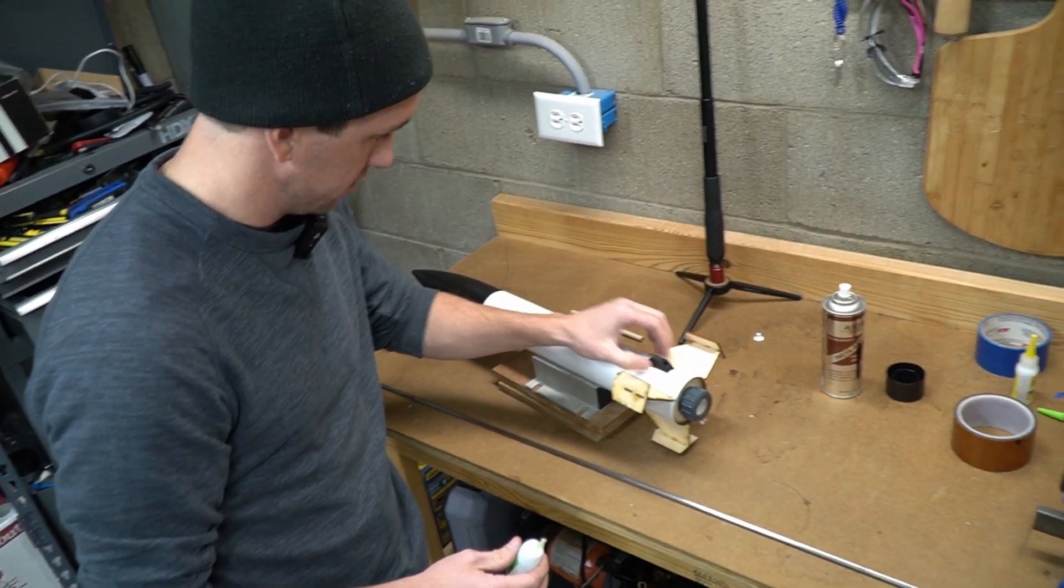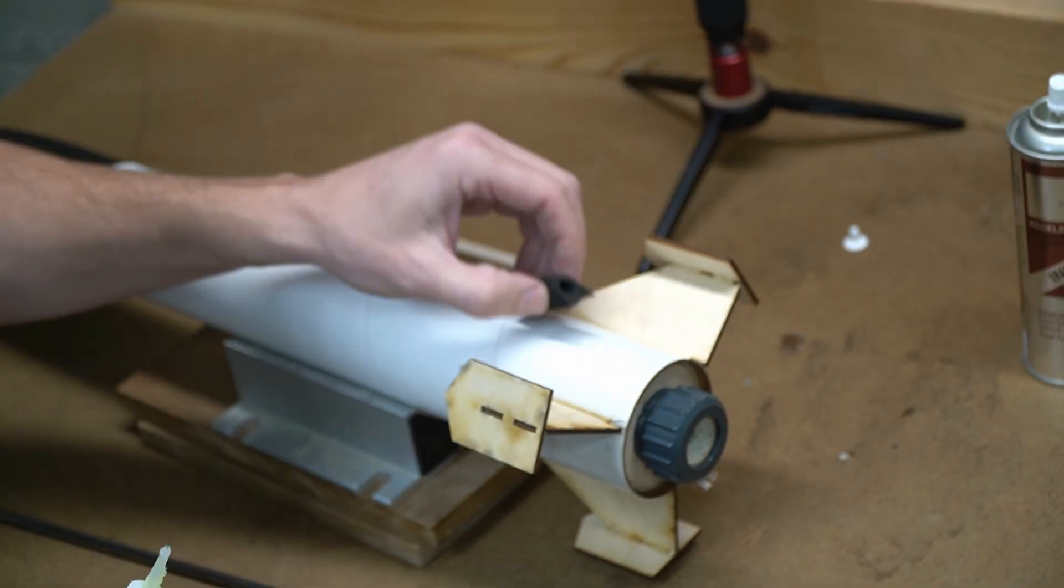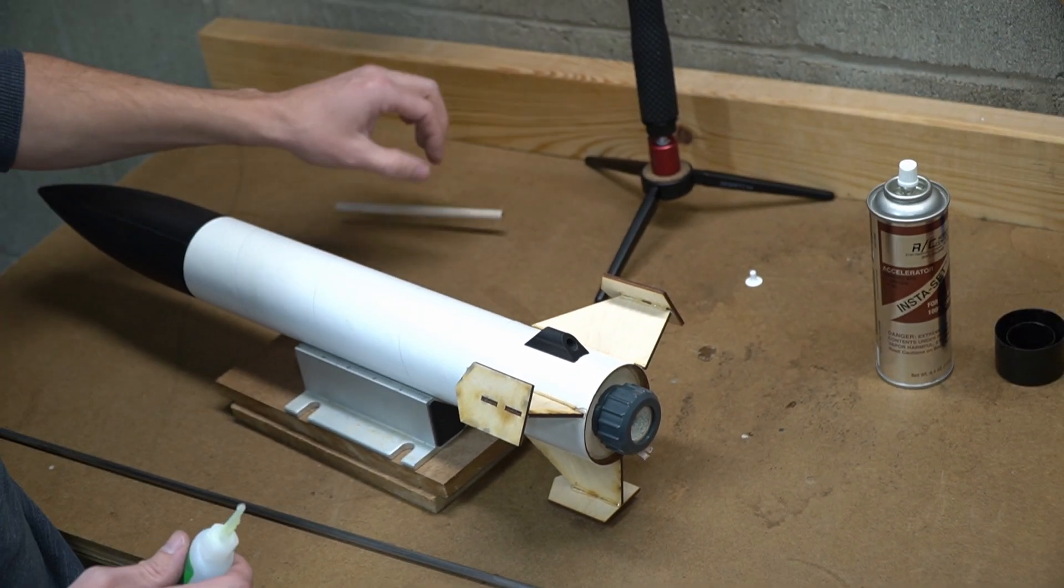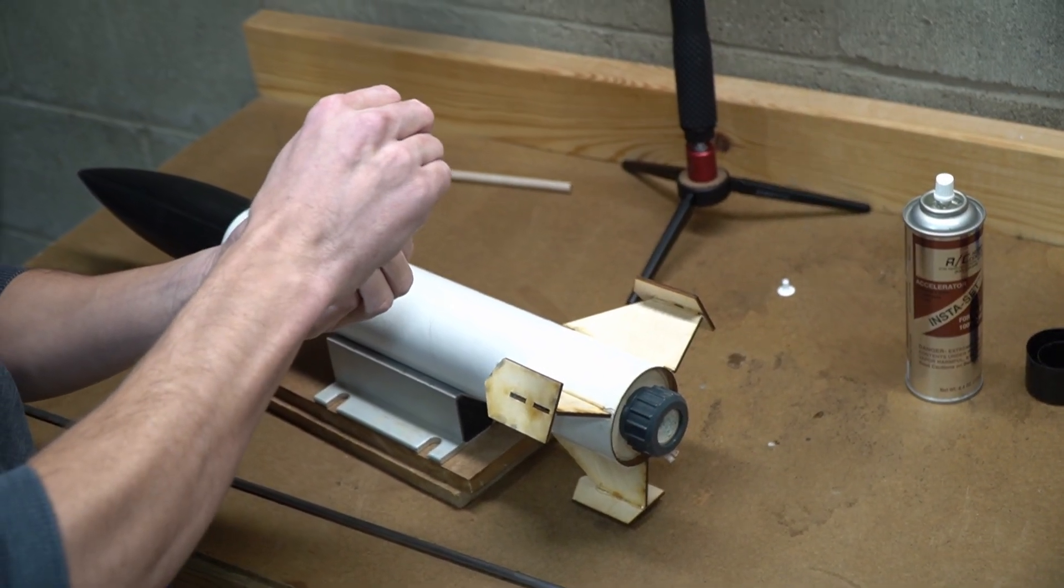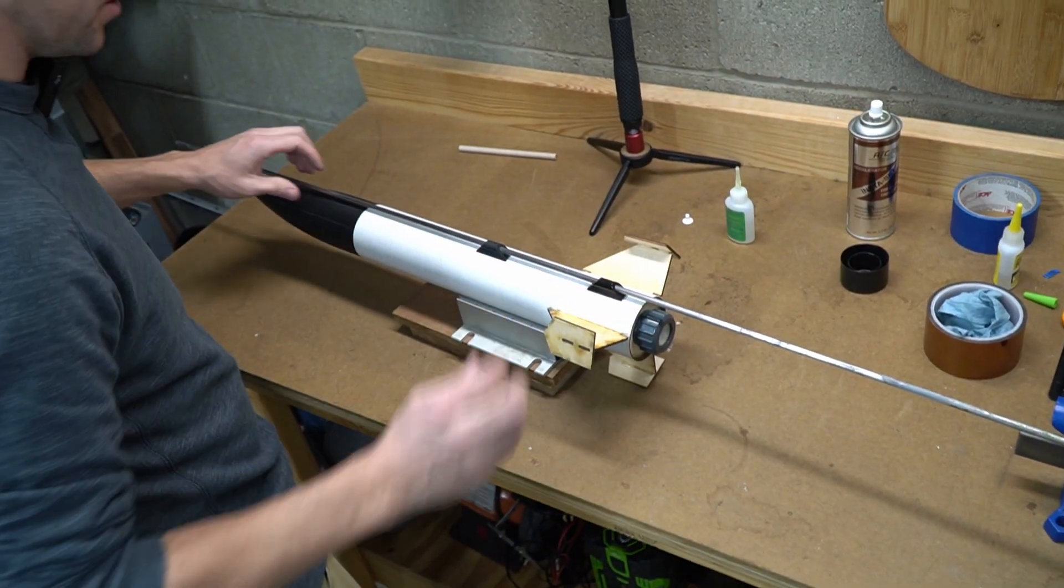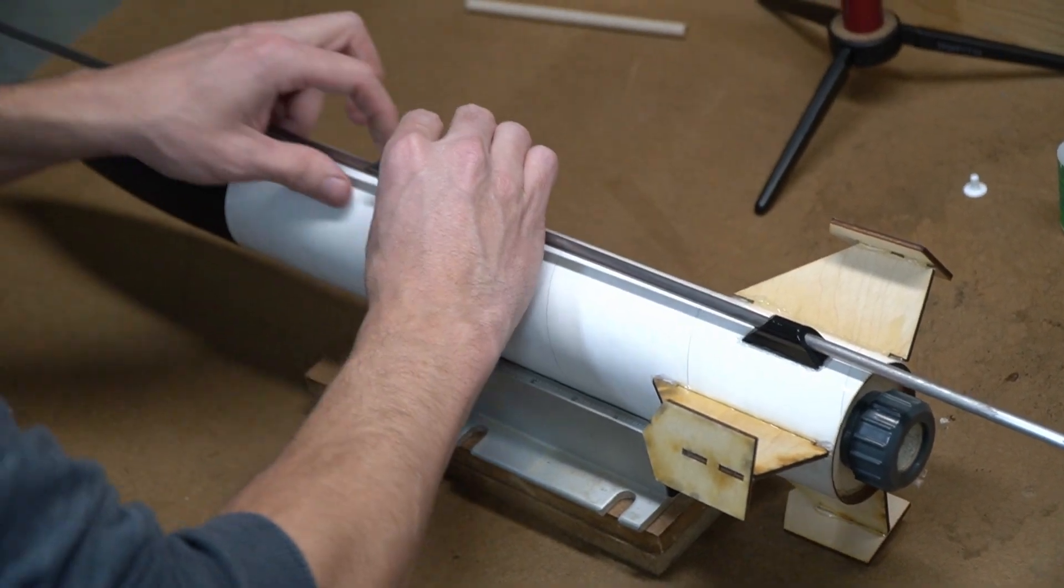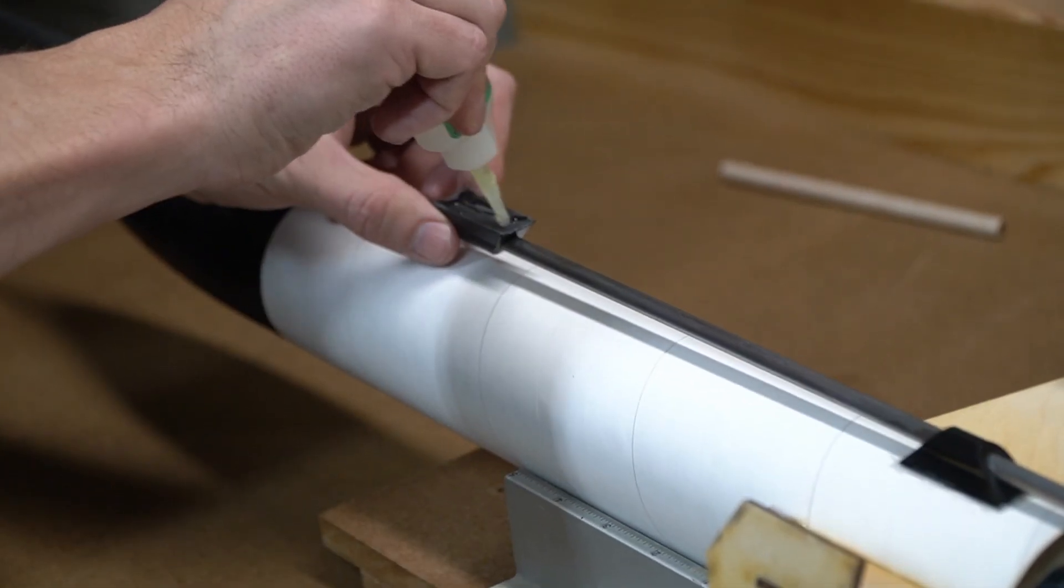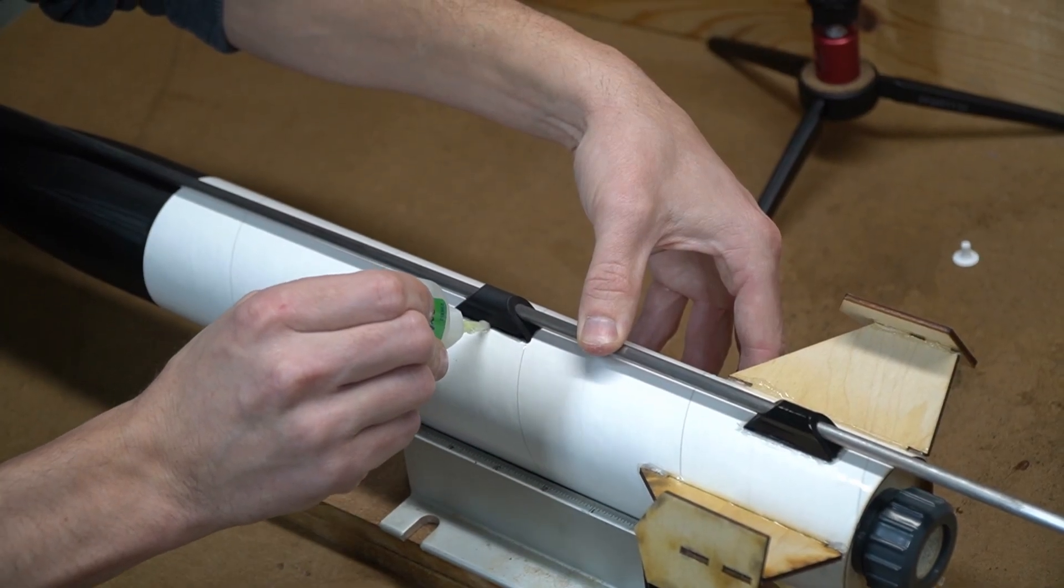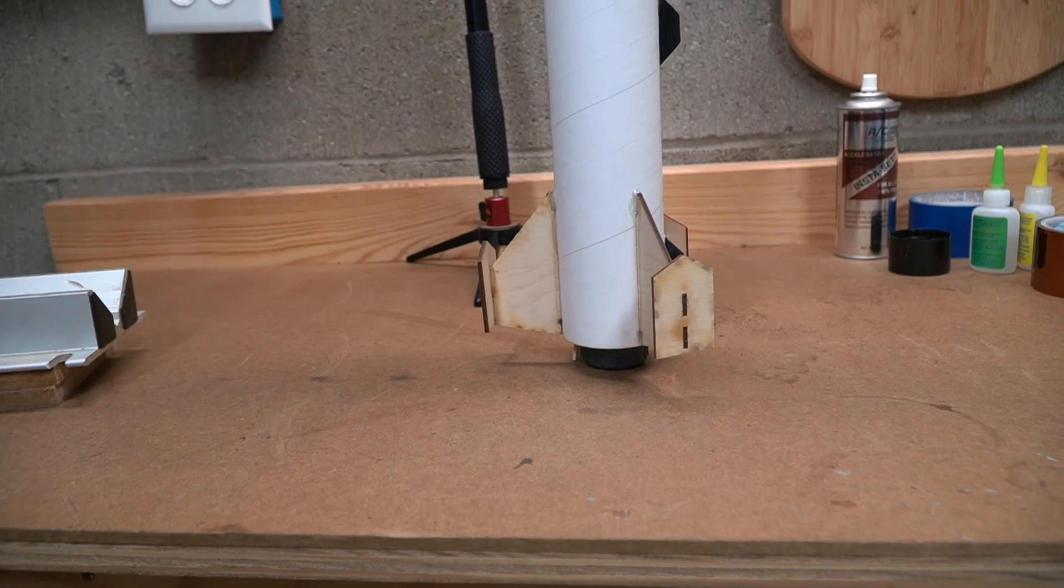Last thing I'm going to do is glue on these rail guides. I like these little 3D printed ones because they match the body tube diameter so they just sit in place, a lot easier to work with than the tube that they give you. To glue the second one in place, I'm just going to use the launch rod as a guide.